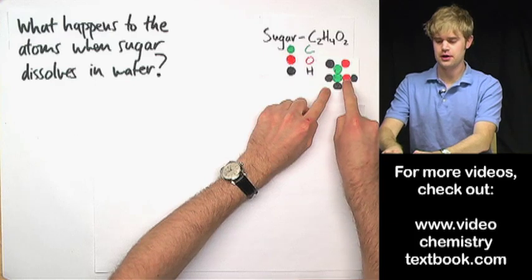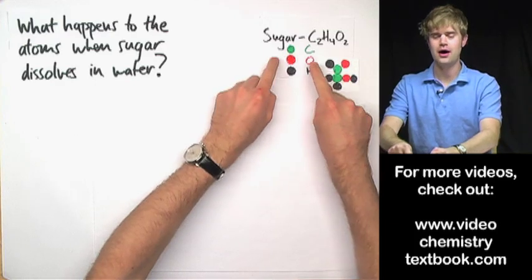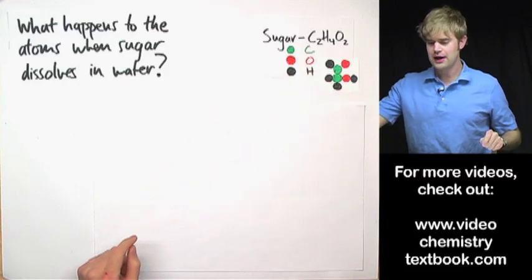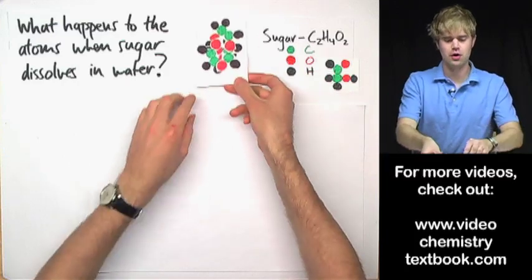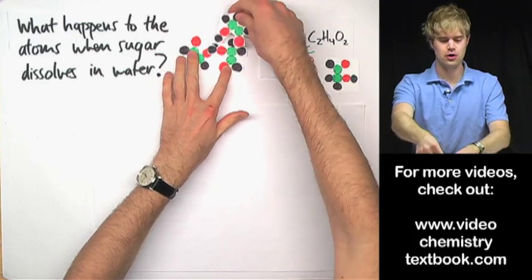Here's what a molecule of sugar looks like. It's got two carbons, four hydrogens, and two oxygen atoms. And a grain of sugar like the kind that you would actually dissolve in water looks like this. It's a clump of a bunch of these sugar molecules all clumped together.